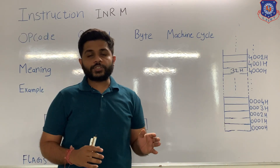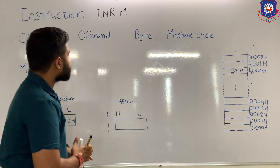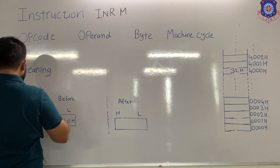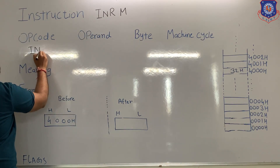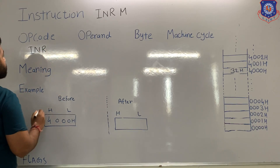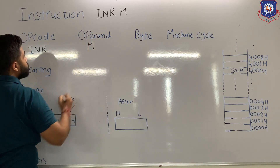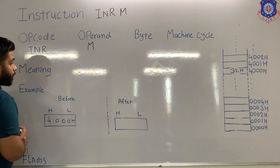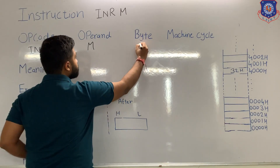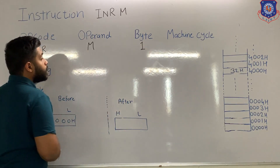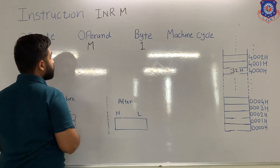Let's see the next instruction, that is INR M. The first part of the instruction is INR, which is also known as UPGOOD. The remaining part of the instruction is M, that is known as OPGOOD. In this instruction, no data is present, which means this instruction is of only one byte.